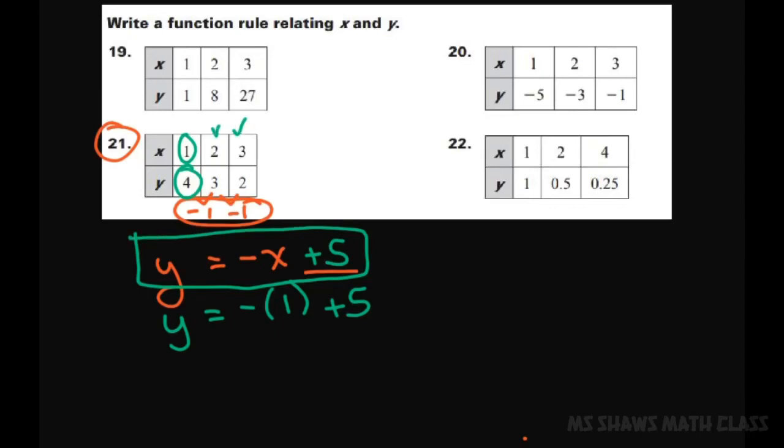So we have Y equals negative X is 2 plus 5. That gives you 3. That checks. And let's try the last one. Y equals, that would be again using this formula, negative 3 plus 5 equals 2. So that checks out.